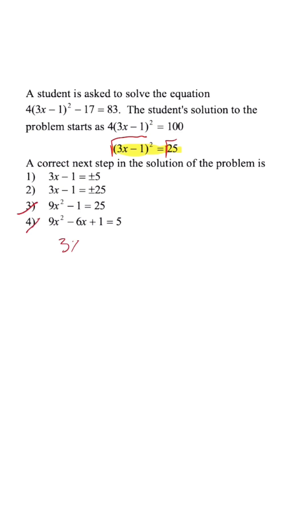Now we're left with 3x minus 1, because the radical and variable exponent cancel each other out, and that's equal to plus or minus the square root of 25, which is 5. So our correct answer choice is number 1.